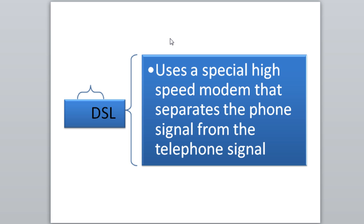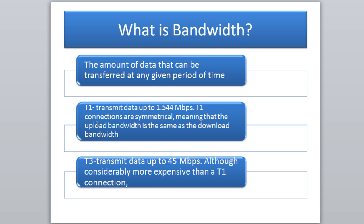DSL uses a special high-speed modem that separates the phone signal from the internet signal. It's a lot faster — versus dial-up's 56 kilobits per second, DSL is more like 1.14 megabits per second, which is a tremendous difference. A download that took 12 minutes on dial-up might take about 3 minutes on DSL. However, for streaming video or Xbox Live, DSL may not keep up and you'd need more bandwidth.